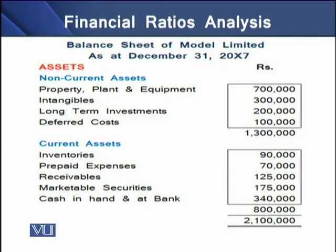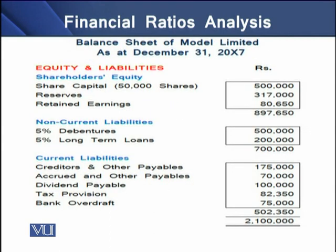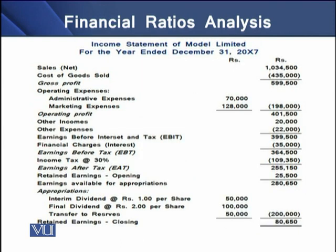Before we go into financial ratio analysis, we have certain financial statements for reference. On the screen you can see a balance sheet of Model Limited, showing assets classified into non-current assets and current assets, and a liabilities side classified into shareholders' equity, non-current liabilities, and current liabilities. We also have a model income statement that starts from sales, covers every variable of the income statement, and ends on closing retained earnings.